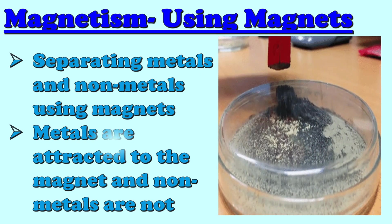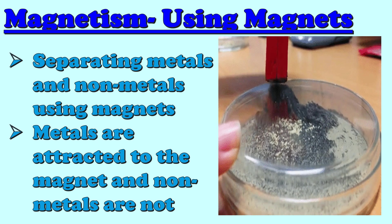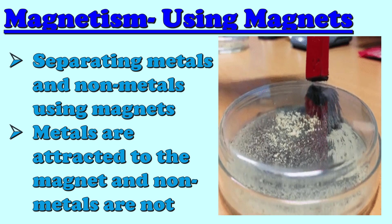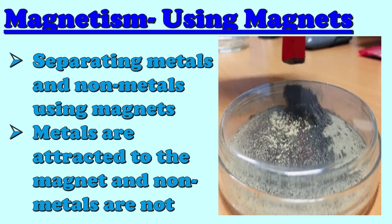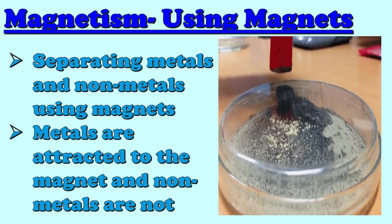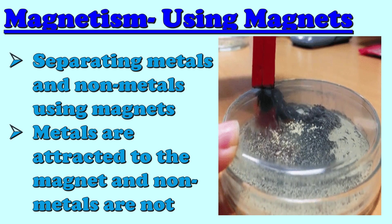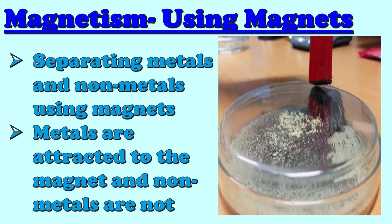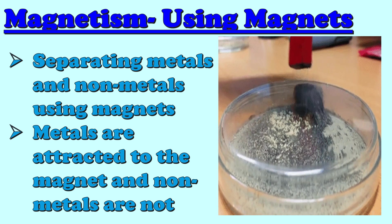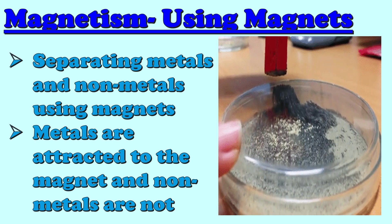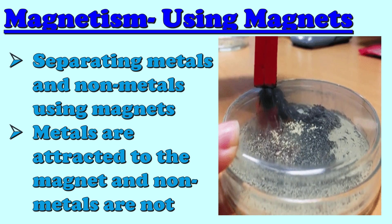Magnetism, or separating mixtures using magnets, is used to separate metals and non-metals using magnets. Metals are attracted to the magnet and non-metals are not.